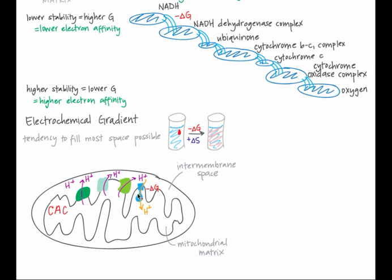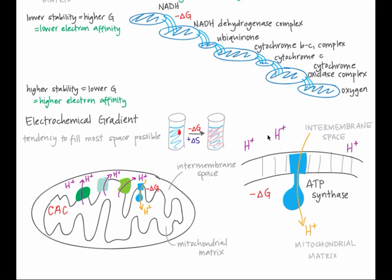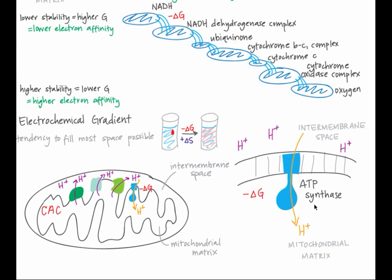Hydrogen ions are allowed to cross the inner mitochondrial membrane at ATP synthase. Because the concentration of hydrogen ions is higher in the intermembrane space, hydrogen ions flow from the intermembrane space into the mitochondrial matrix. As they do so, they reach lower potential energy and thus lower free energy. The energy released in this spontaneous process is harnessed to drive the rotation of ATP synthase. The kinetic energy of that rotation is then used to force ADP and inorganic phosphate together, forming ATP.